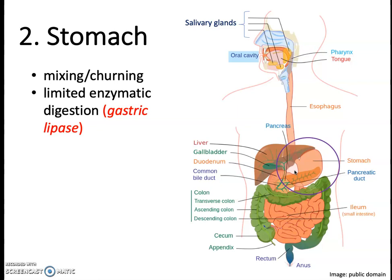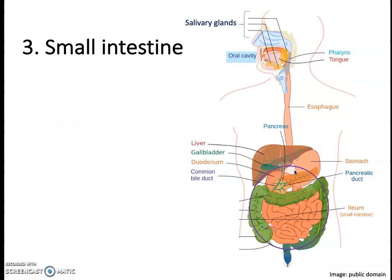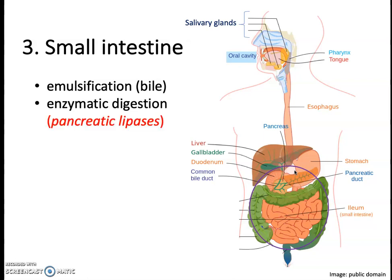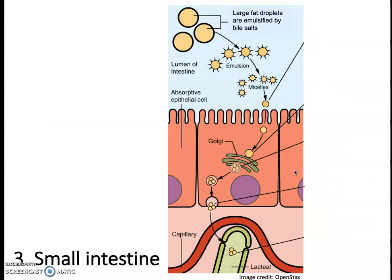However, most of that process actually occurs in the small intestine. The first major step there is emulsification, which happens with the help of bile — this is the process where large lipid globules are broken down into smaller droplets. We also have the bulk of enzymatic digestion occurring here, thanks to lipases secreted from the pancreas. And then the products of lipid digestion need to be absorbed, which happens with the help of micelles. Let's take a closer look at each of these processes.